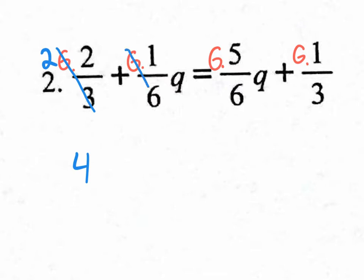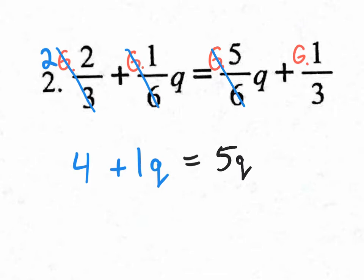Over here, when we divide the 6 by 6 — 6 divided by 6 is 1, it cancels out. The only thing left is plus 1Q. Then the equal sign comes down, and 6 divided by 6 cancels out, leaving 5Q. Then 6 on top divided by 3 on the bottom: 6 divided by 3 is 2, and 2 times 1 is 2. So we really have a plus 2.